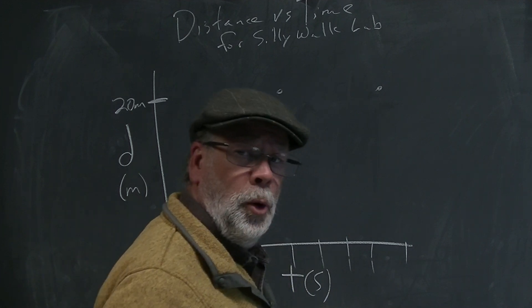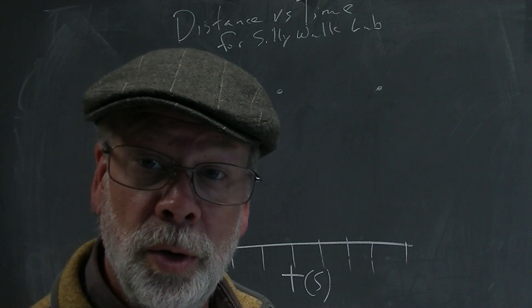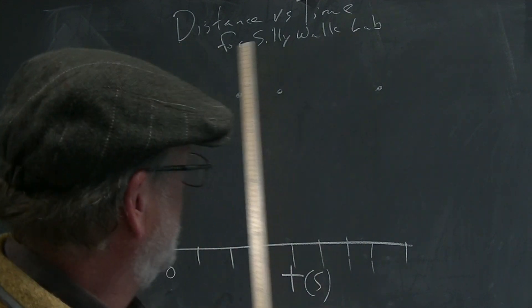Alright, do you only have 1 point for each graph? I don't think so, because at 0 seconds, where were you? 0 meters. So each one of these has 2 points.